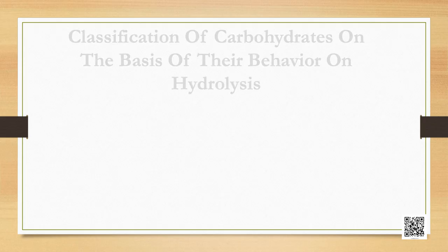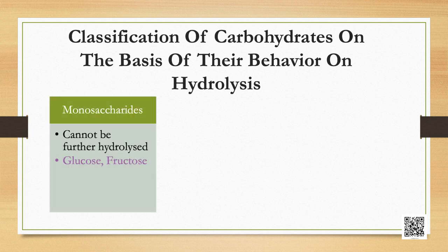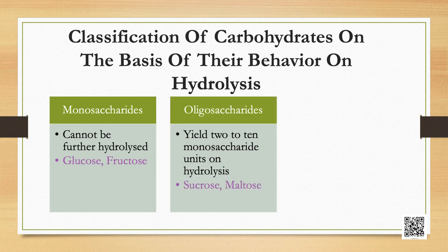The most common sugar used in our homes is sucrose. On the basis of their behavior on hydrolysis, carbohydrates are classified broadly into three groups. First, monosaccharides: a carbohydrate that cannot be hydrolyzed further to give simpler units of polyhydroxy aldehyde or ketone is called a monosaccharide; examples are glucose and fructose. Next, oligosaccharides: carbohydrates that yield two to ten monosaccharide units on hydrolysis; examples are sucrose and maltose. They are further classified as disaccharides, trisaccharides, depending upon the number of monosaccharides they provide on hydrolysis.